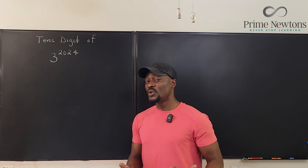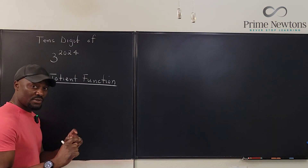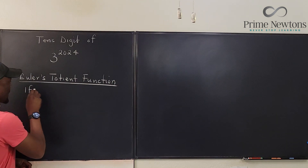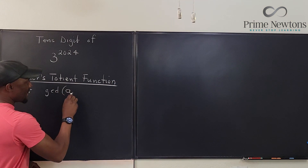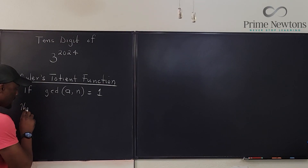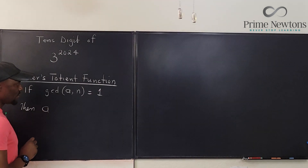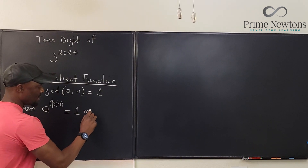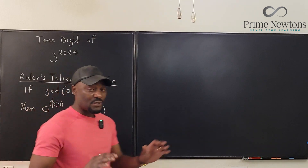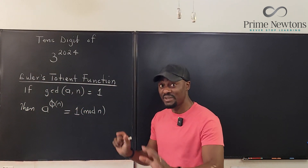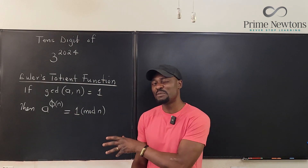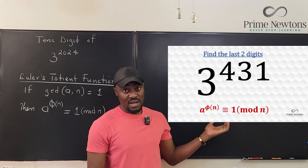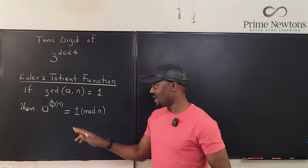What exactly is Euler's totient function? If two numbers a and n are relatively prime — that is, they have no common factors, so the greatest common divisor of a and n is 1 — then a raised to the power phi of n is equal to 1 mod n. If you don't know number theory, I'll explain briefly; I have another video with a fuller explanation.